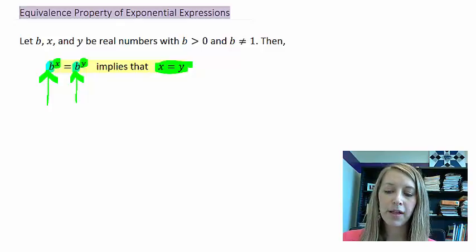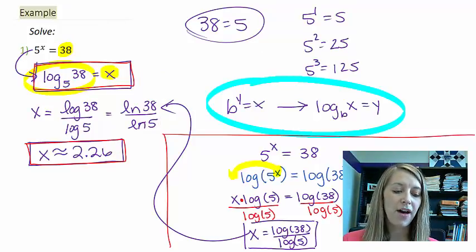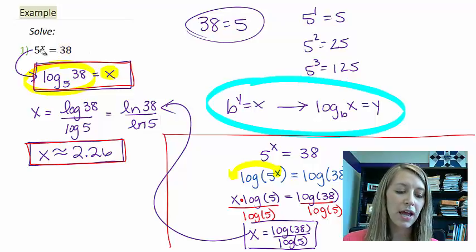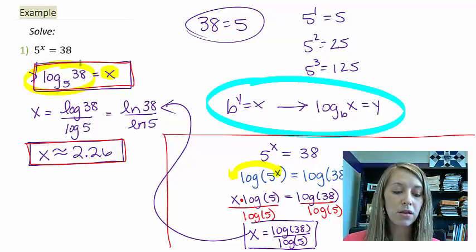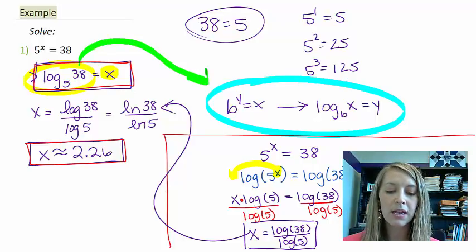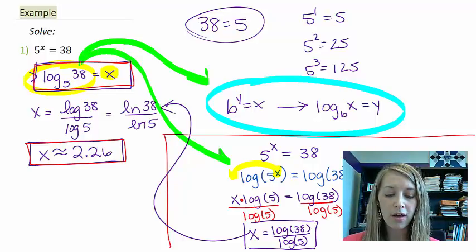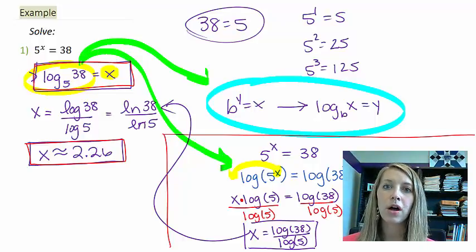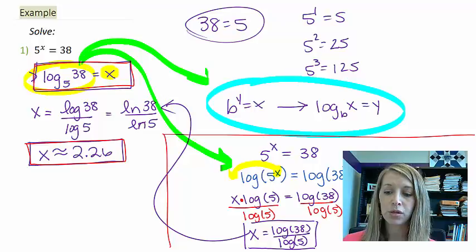But we saw an example last time where we could not make our bases match. So we had 5 to the x is equal to 38, and that was just impossible. So we solved this one by two different methods. We could either solve it by rewriting it in the logarithmic form, or we can solve it by taking log of both sides and then applying the logarithmic property.